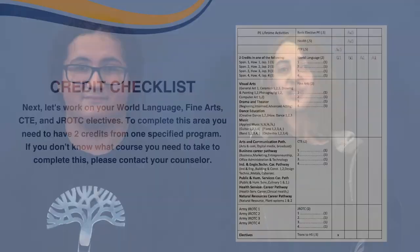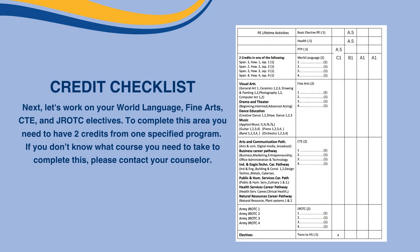Next, let's work on your World Language, Fine Arts, CTE, and JROTC electives. To complete this area, you'll need to have two credits from one specified program. If you don't know what course you need to take to complete this, please contact your counselor.